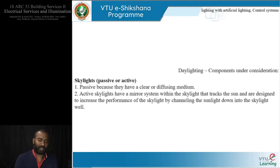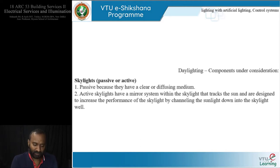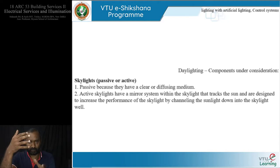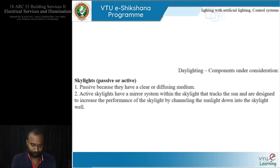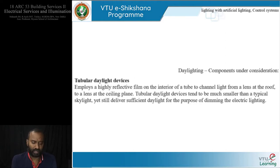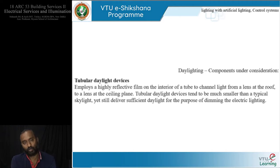Skylights are of passive and active types. Passive skylights have a naturally diffusing medium. Active skylights have a mirror system within the skylight that tracks the sun and is designed to increase the skylight's performance by channeling sunlight down into the skylight well. For tubular daylight devices, the skylight well is replaced with a tube that uses a high-reflective film on the interior to channel light from a lens at the roof to the place where you want it through another lens.